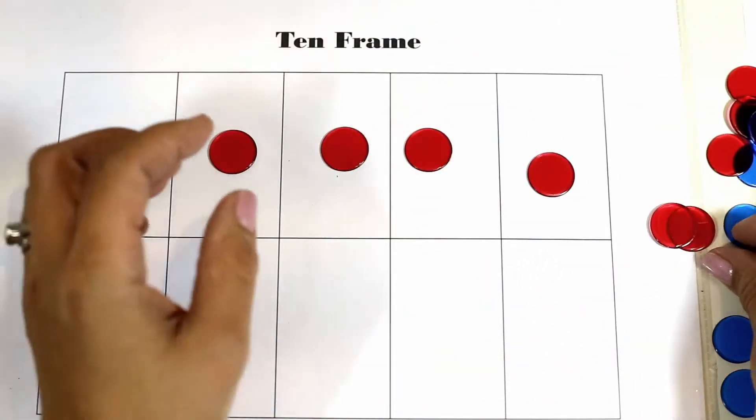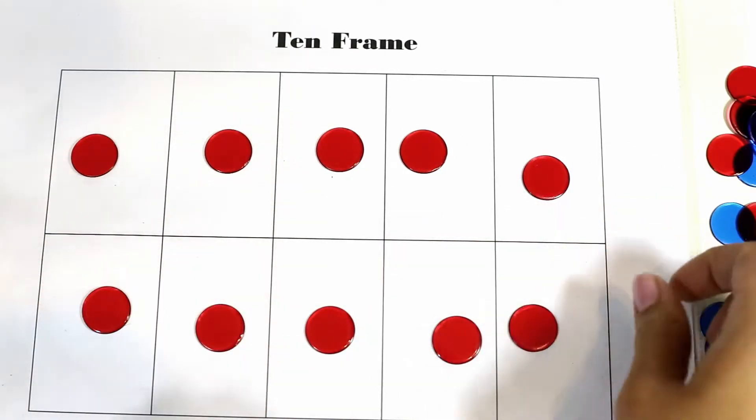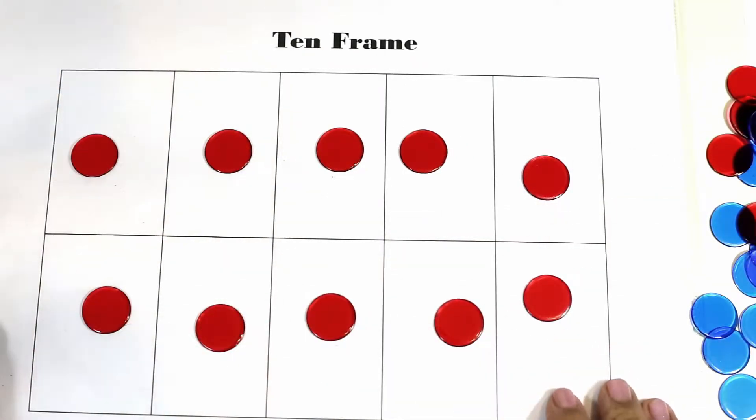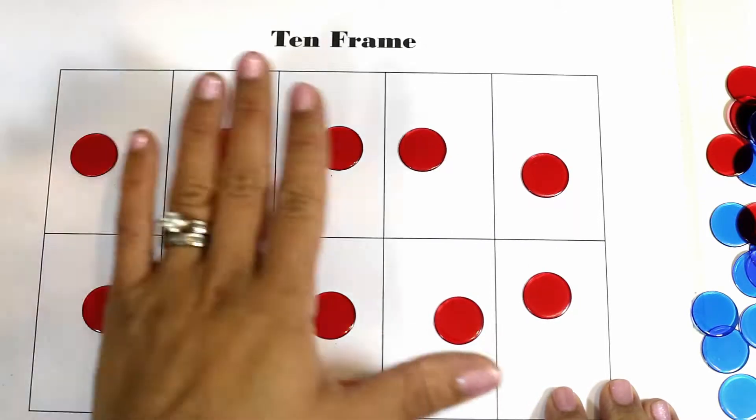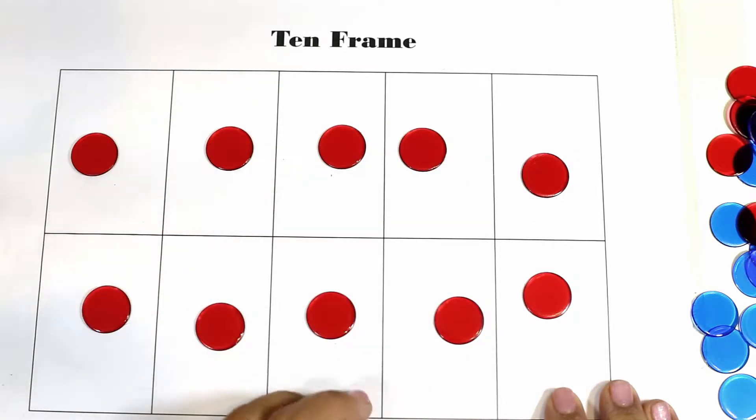Since they see that the whole row is filled then they can just say five. That's the same thing for when they see that the whole tens frame is filled then they can identify that there are ten counters. They don't need to touch each one. They can identify that it is ten.